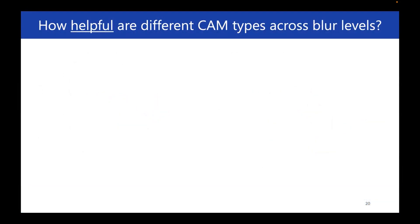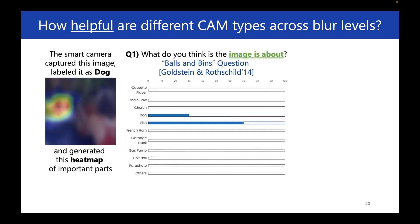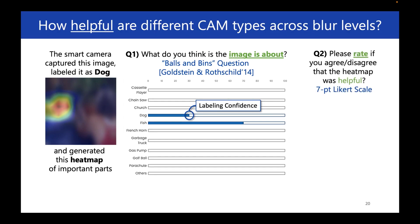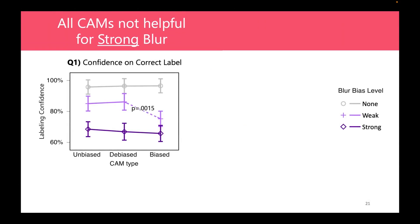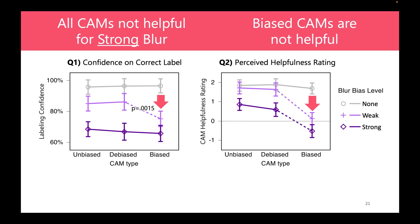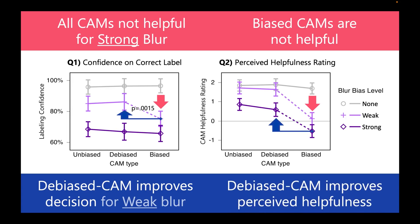We also measured whether participants considered the saliency map helpful in an image label verification task. Instead of a common multiple-choice question, we used the bets and beans question to elicit answers as a probability distribution, allowing us to measure participants' confidence of the correct label even if their most likely choice was wrong. We collected subjective helpfulness ratings in a study with 162 participants. Results indicate that although all CAM variants do not help people label heavily blurred images, and biased CAM tends to degrade helpfulness, Debiased CAM can significantly improve user decision performance on moderately blurred images, and users generally consider Debiased CAM more helpful in labeling regardless of blur intensity.